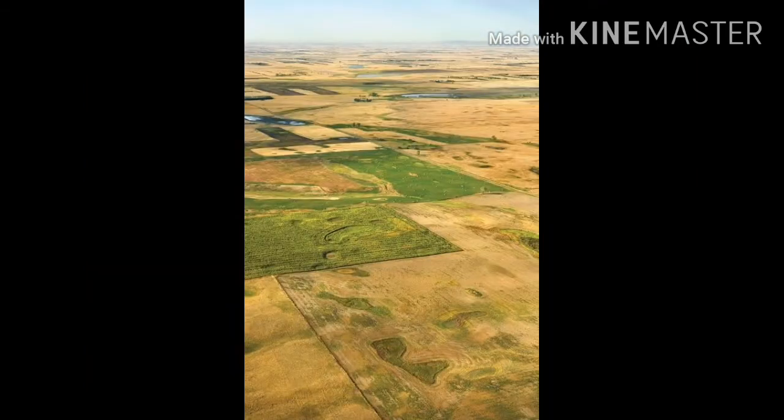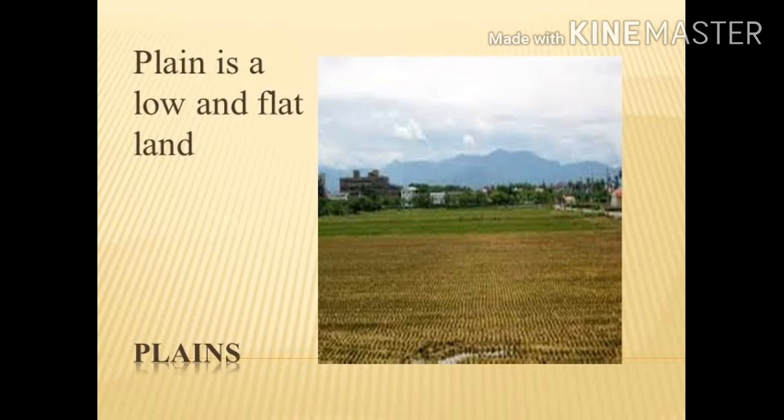The third type of land form is plain land. Plains are vast stretches of low and flat land, and they also include slightly undulating land with slight slopes and curves. Plain lands are very important for agriculture and also for building networks of rails and roadways.